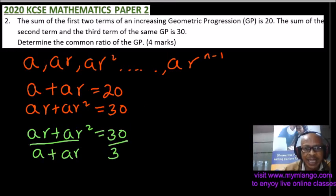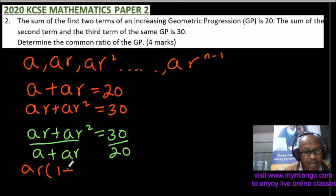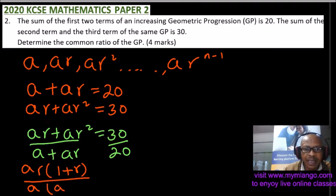We can simplify by factoring out ar on top, leaving ar(1 + r). On the bottom, we factor out a, leaving a(1 + r) = 3/2 when simplified.